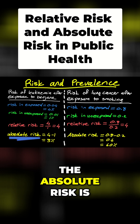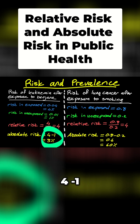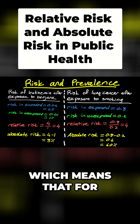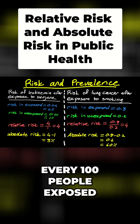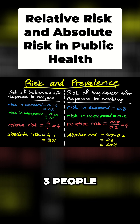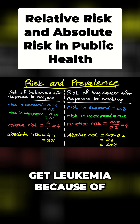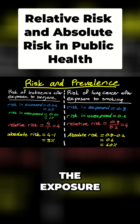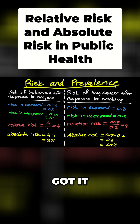The absolute risk is 4 minus 1, which is 3%, which means that for every 100 people exposed to benzene, there'll be an additional three people that get leukemia because of the exposure.